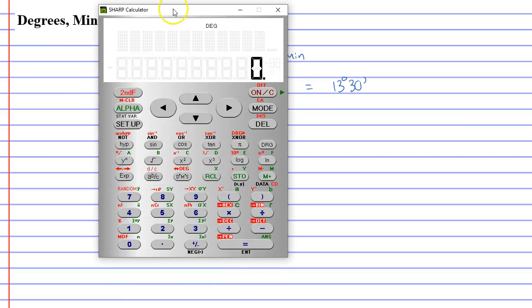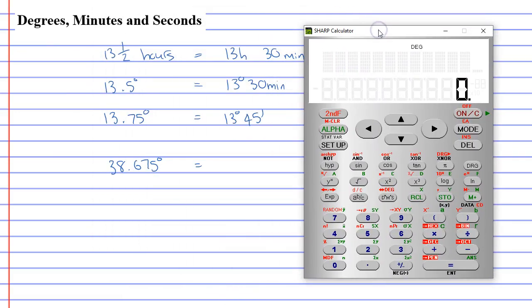So up here, I've got a sharp calculator. And we're going to write 38.675, and then equals. And it's going to remain as a decimal. And we want to convert it to degrees, minutes, and seconds, using the degrees, minutes, seconds button, which on this calculator just says DMS.